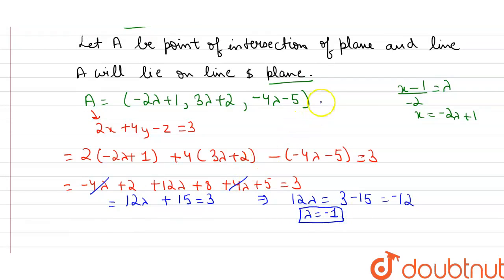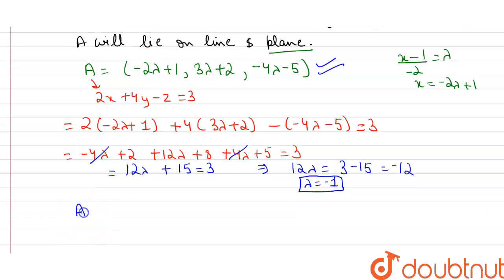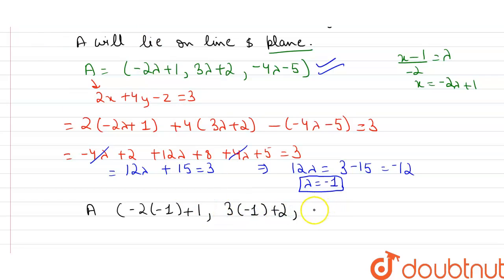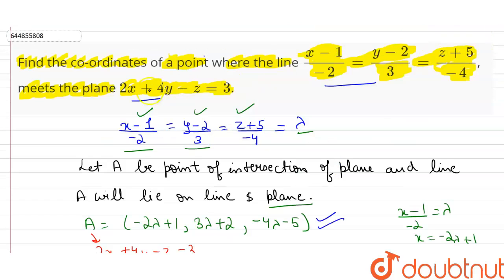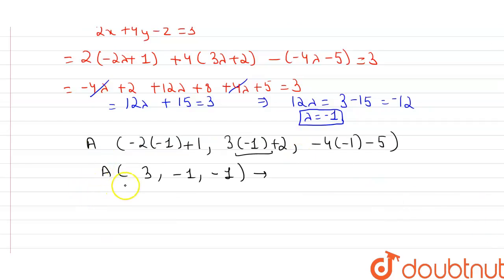We have got the value of lambda = -1. Substituting into the coordinates of A: x = -2(-1) + 1 = 2 + 1 = 3; y = 3(-1) + 2 = -3 + 2 = -1; z = -4(-1) - 5 = 4 - 5 = -1. So point A is (3, -1, -1), which is the point where the line and the plane meet. Our answer is point A(3, -1, -1).